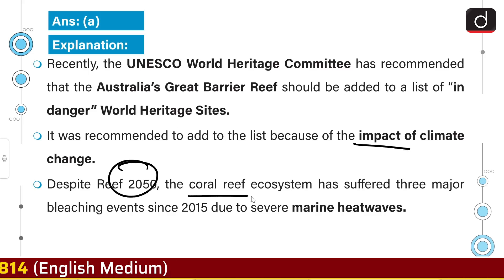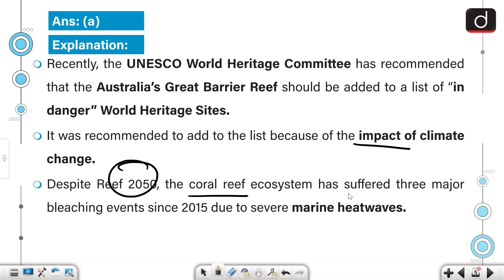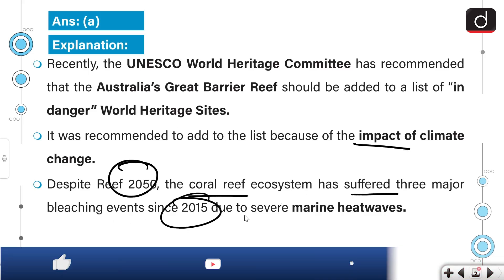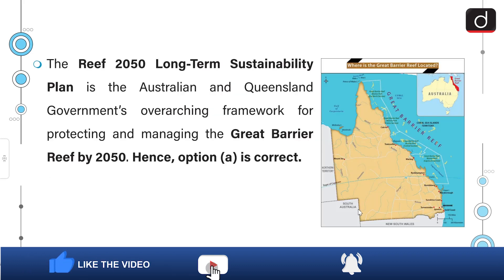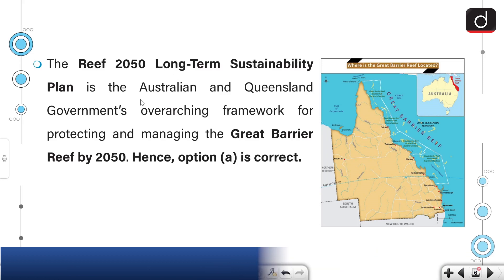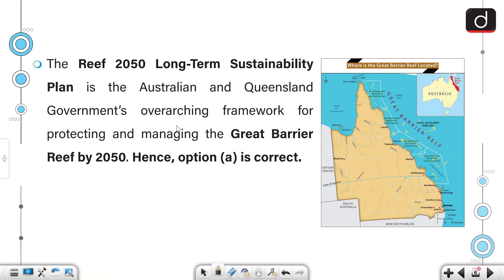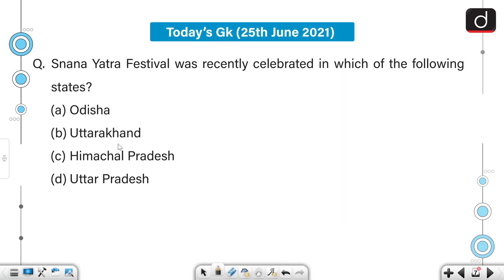Despite Reef 2050, the coral reef ecosystem has suffered three major bleaching events since 2015 due to severe marine heat waves. The Reef 2050 Long-Term Sustainability Plan is the Australian and Queensland governments' overarching framework for protecting and managing the Great Barrier Reef by 2050.